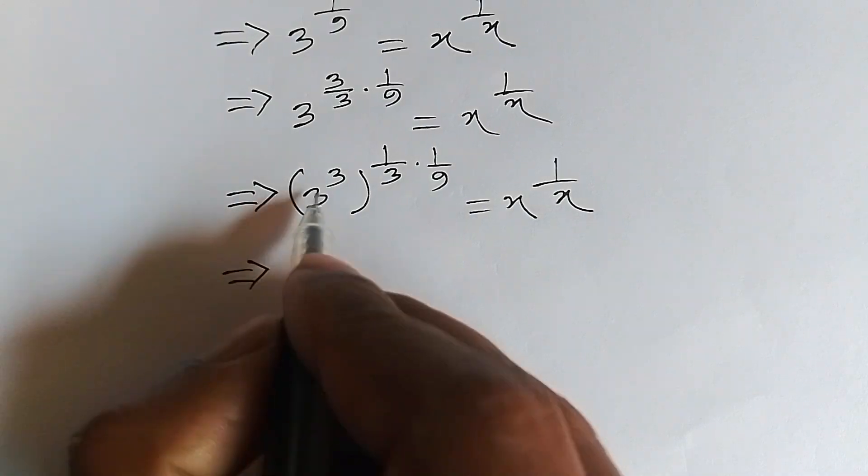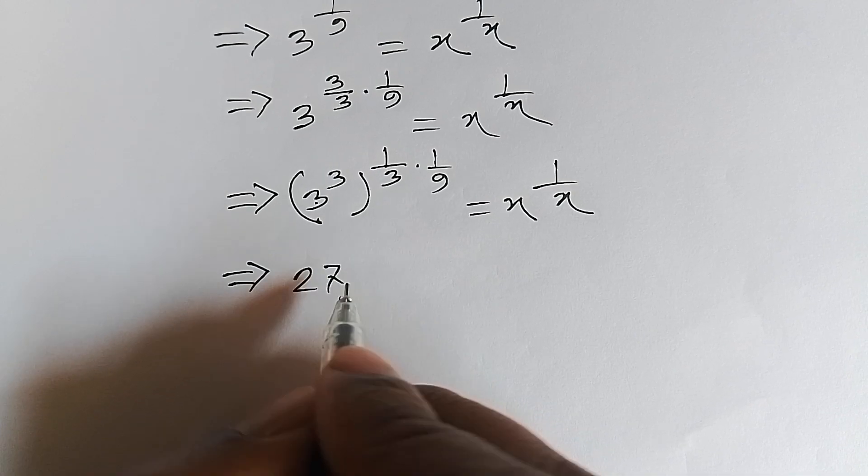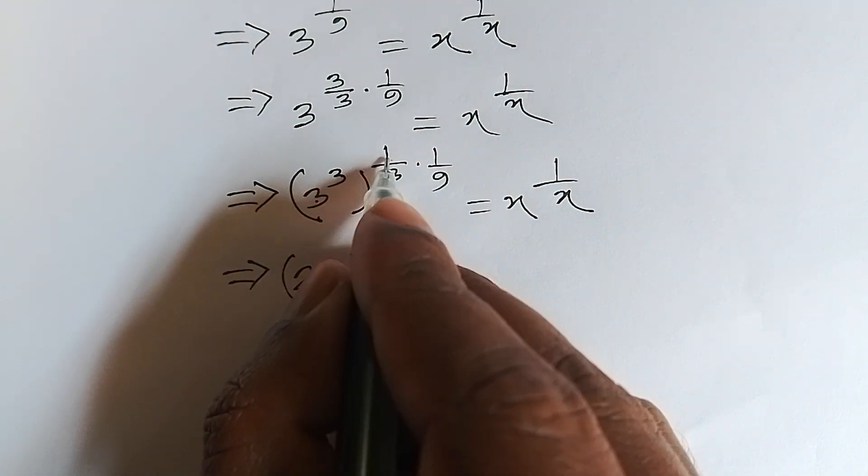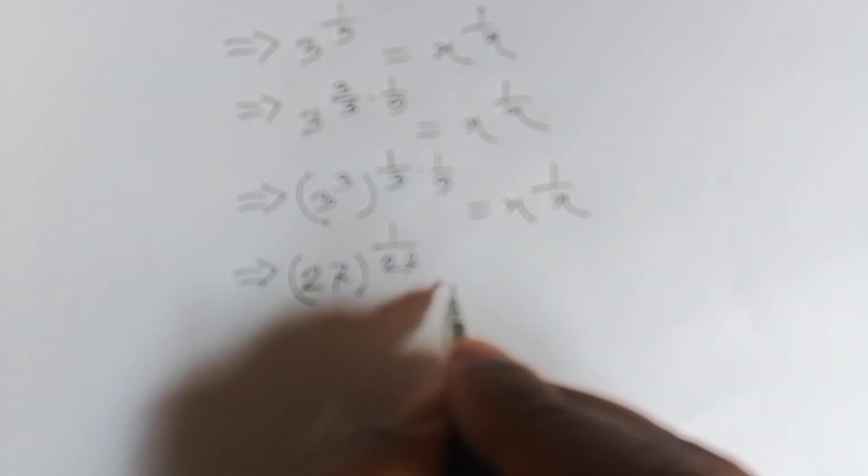3 to the power 3 equals 27, and the power simplifies to 1 over 27. So 27 to the power 1 over 27 equals x to the power 1 over x.